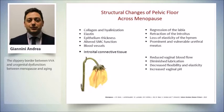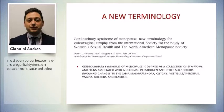All these changes can worsen symptoms and produce anatomical changes to the genital tract, for example regression of the labia, retraction of the introitus, loss of elasticity, and a prominent and vulnerable urethral meatus. Moreover, during the menopausal transition there is reduced vaginal blood flow, diminished lubrication, decreased flexibility and elasticity of tissue, and an increase in vaginal pH.